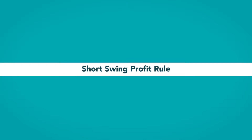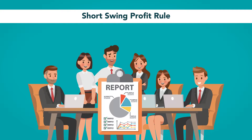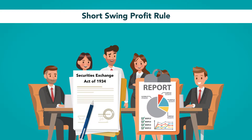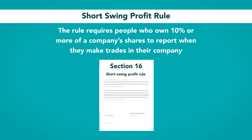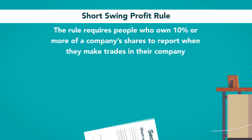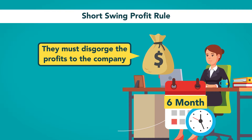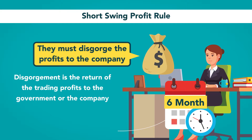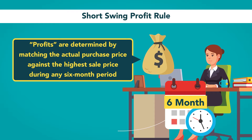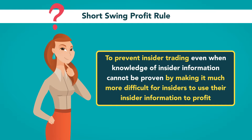Short Swing Profit Rule. It is assumed that high-level executives, directors, and investors may have access to inside information. For this reason, the 1934 Securities Exchange Act codified what is known as the Short Swing Profit Rule in Section 16. This rule requires people who own 10% or more of a company's shares to report when they make trades in their company. If they buy and sell the company's stock in any six-month period, they must disgorge the profits to the company. Disgorgement is the return of the trading profits to the government or the company. Profits are determined by matching the actual purchase price against the highest sale price during any six-month period. The purpose of this rule is to prevent insider trading even when knowledge of insider information cannot be proven, by making it much more difficult for insiders to use their information to profit.